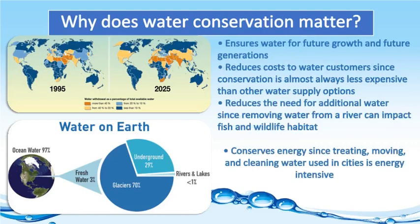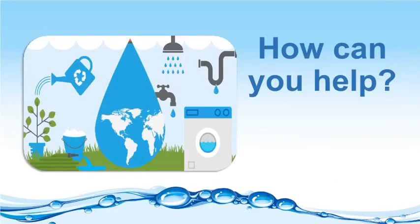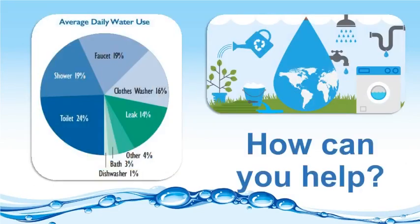How can we help save water on earth? Our average daily water use: 19% from shower, 19% from faucet, 16% for washing clothes, 14% in leakage, 24% in toilet, and the remaining 8% in bathing, dishwashing, and other uses.